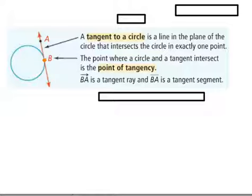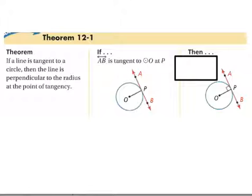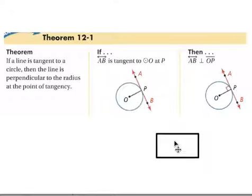Let's look at some more theorems that go with this. If we have AB, this line that is tangent to the circle, then AB is going to be perpendicular to OP. That means it's going to form a right angle right there. That's what's going to make it tangent.